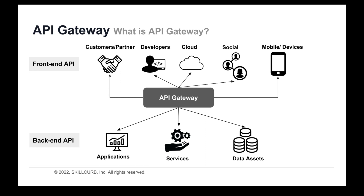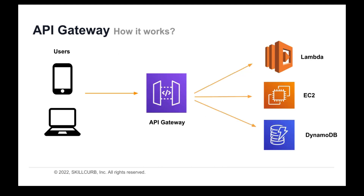An API Gateway plays an important role in ensuring the reliable processing of every API call. So how does API Gateway work? Say you've got some users — your users make calls to the API Gateway when they perform certain actions. Your API Gateway is basically the front door to your whole AWS environment. Depending on the specifications of the call, it could be passed to AWS Lambda, or to an EC2 instance, or it could be writing something to DynamoDB.